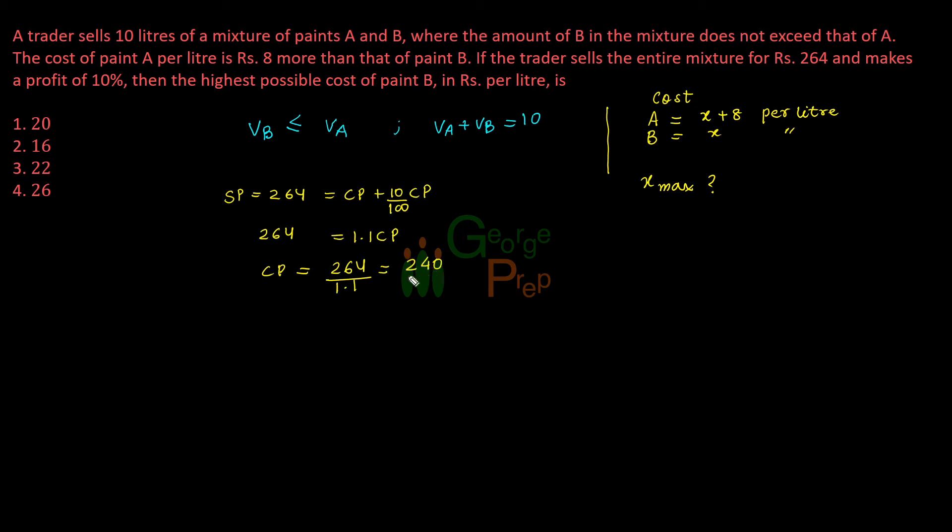Now we know that the total cost price of these two paints put together is 240. If we write the cost in terms of volume and their prices per liter, the volume of A is VA and cost per liter of A is X plus 8. The total cost of paint A is VA into X plus 8. Total cost of paint B will be VB into X. The total cost here comes to 240.